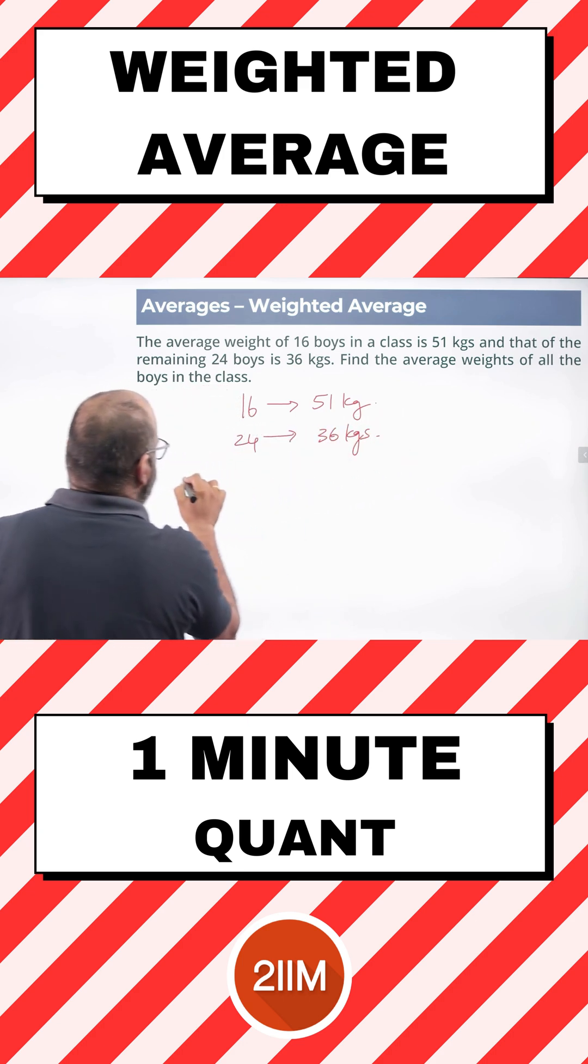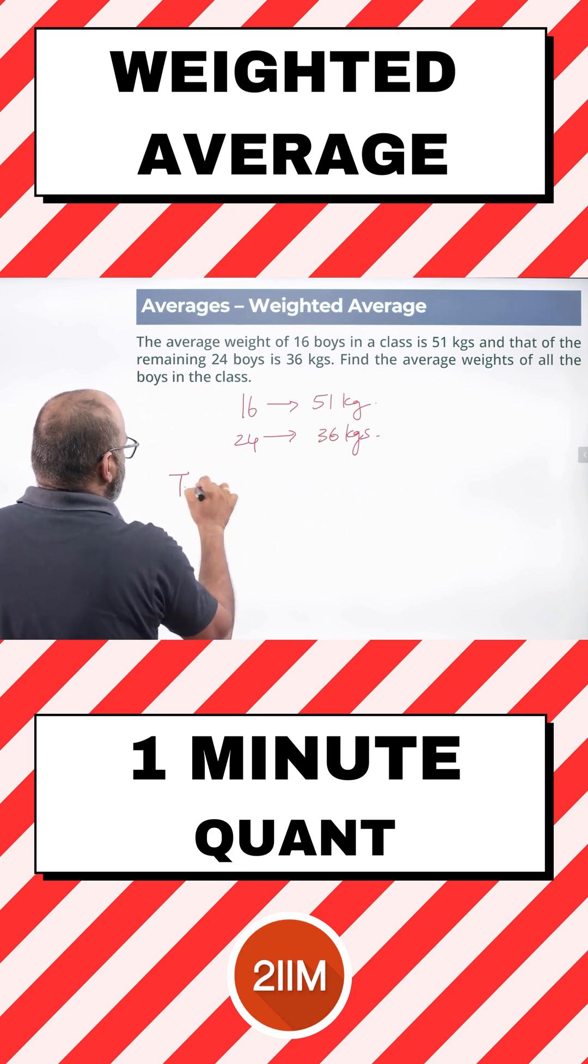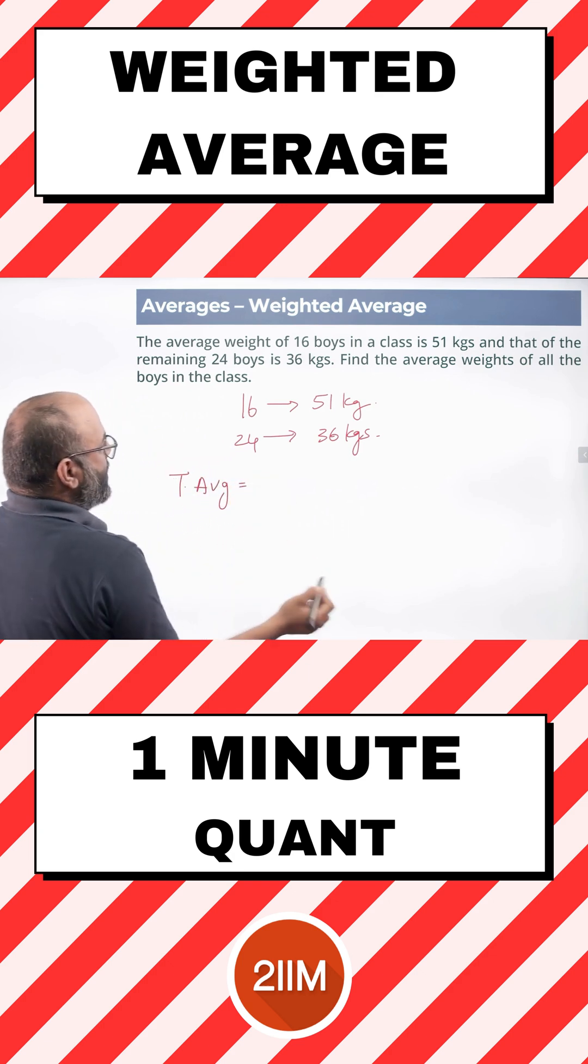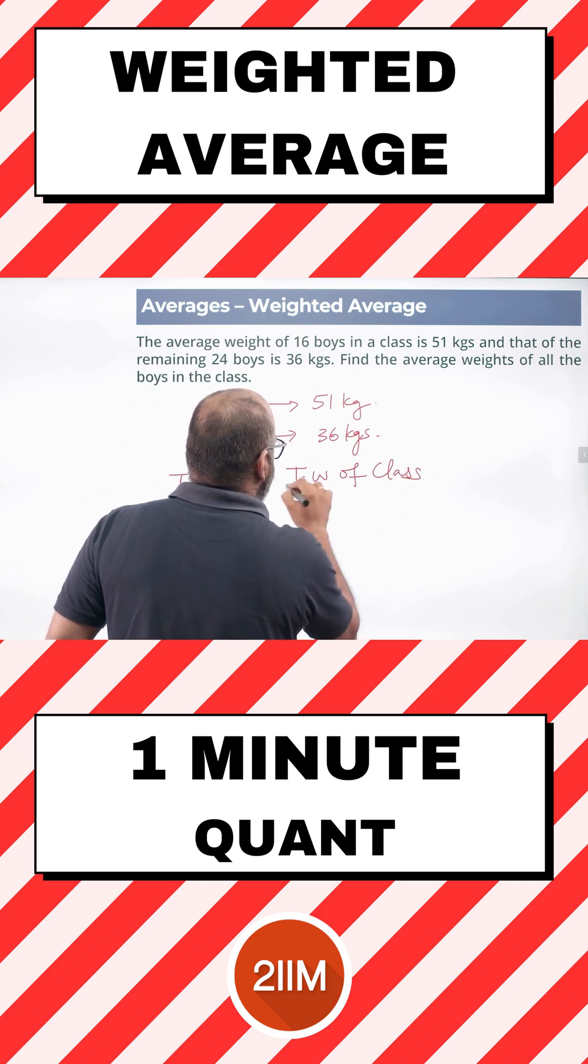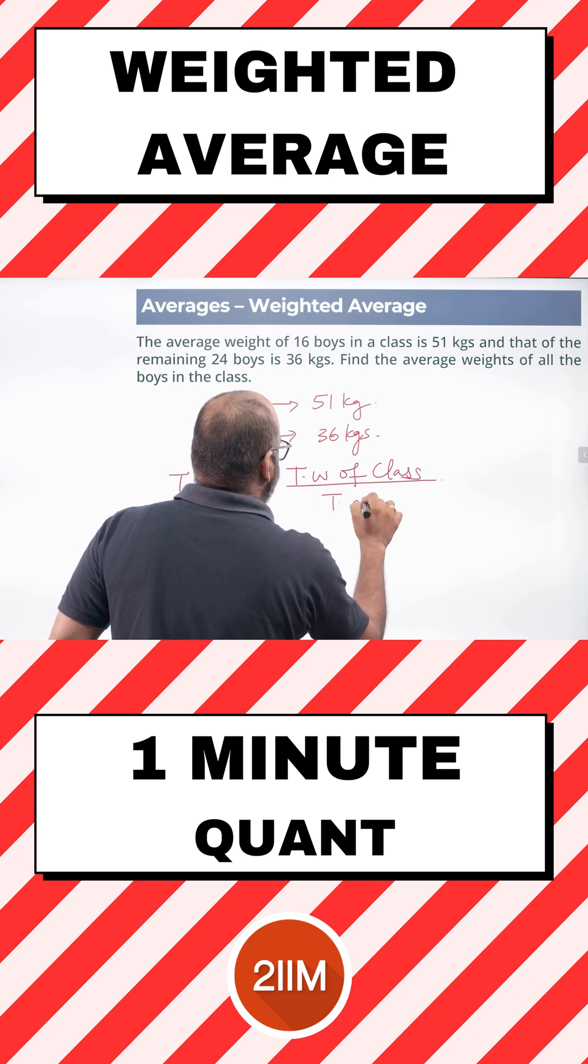They are asking us the total average. Now, the total average of the class is nothing but total weight of class divided by total number of students.